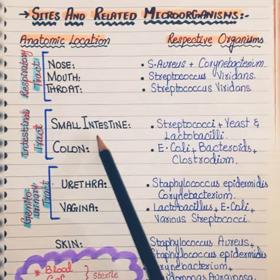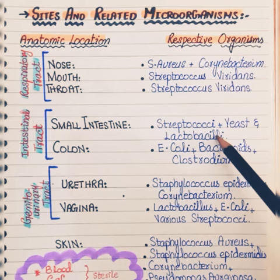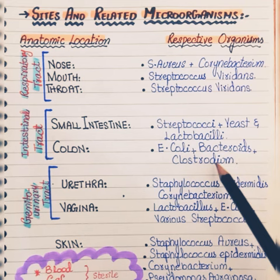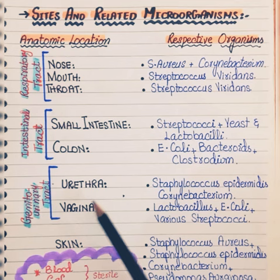In the mouth we have Streptococcus viridans, and in the throat we also have Streptococcus viridans. In the intestinal tract, they are present in the small intestine and the colon. In the small intestine we have Streptococcus, yeast, and Lactobacilli. In the colon we have E. coli, Bacteroides, and Clostridium.